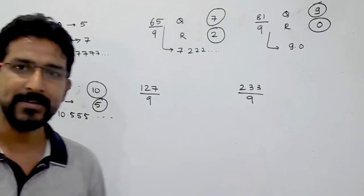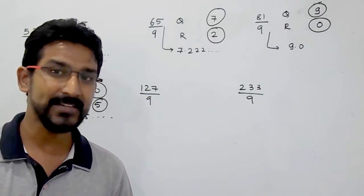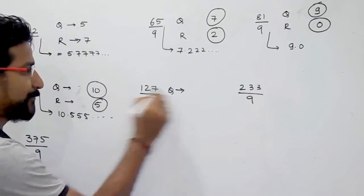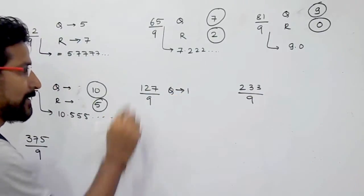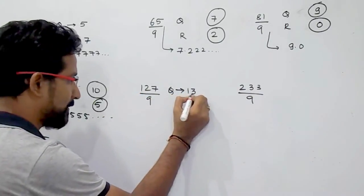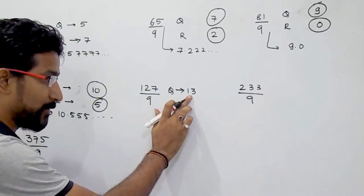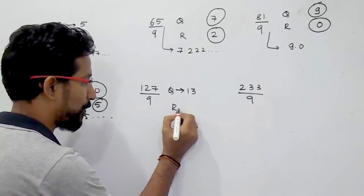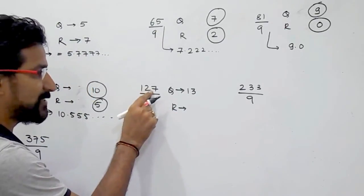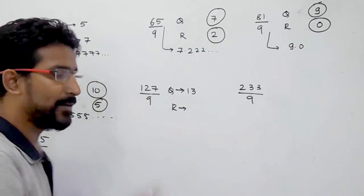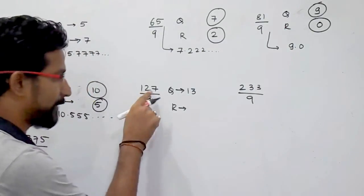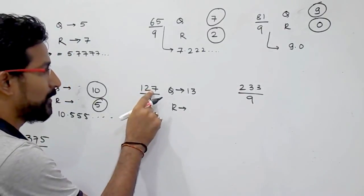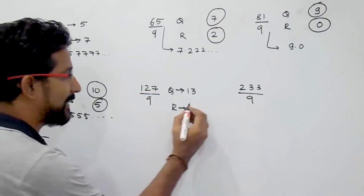Now 127 divided by 9 — it is a 3-digit number. For the quotient, write the first digit as it is: 1. Then 1 plus 2 is 3, giving us 13 so far. One digit is still remaining, which we will use for the remainder. For the remainder, we take the running sum: 1 plus 2 is 3, and then 3 plus 7 is 10.